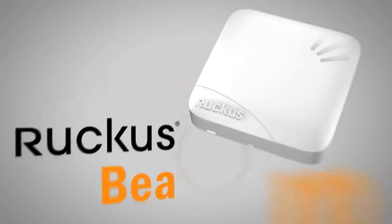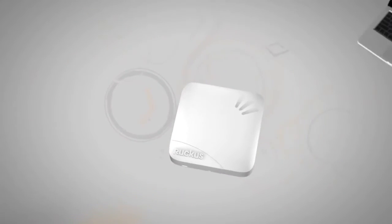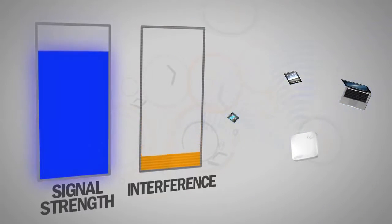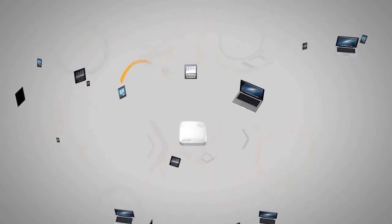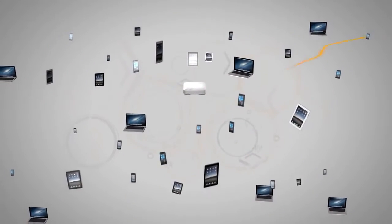Enter Ruckus BeamFlex. BeamFlex is the only adaptive Wi-Fi antenna technology that focuses and controls Wi-Fi signals. By increasing signal and decreasing interference, Wi-Fi performance is improved dramatically. This means more efficient connections and more room for more users, giving them a better Wi-Fi experience.